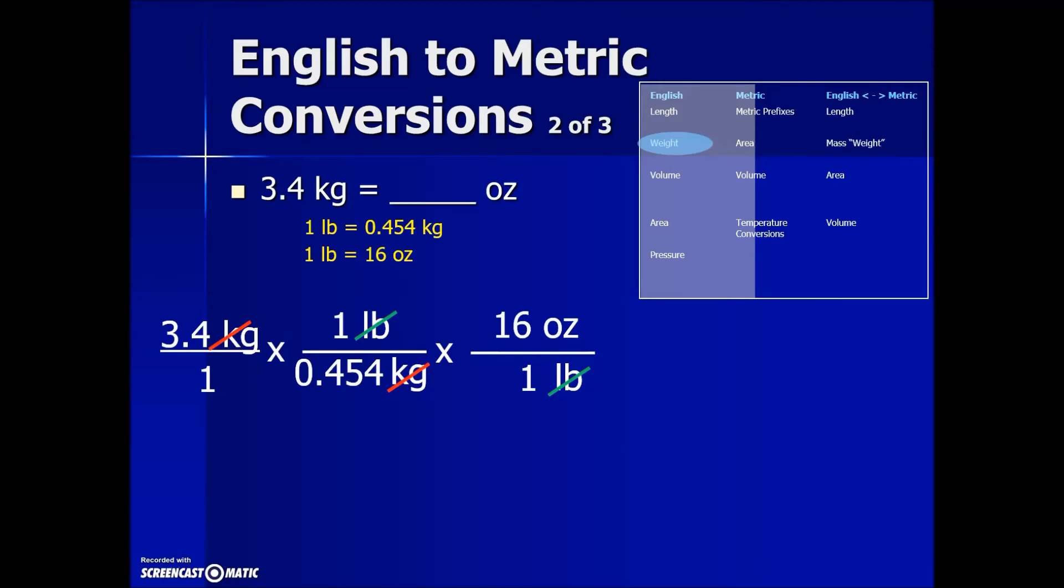Multiplying fractions, you multiply your numerators together, multiply all denominators together, and the last step then would be to take that numerator product and divide it by the denominator product, resulting in 119.8 ounces, the equivalent of the 3.4 kilograms.